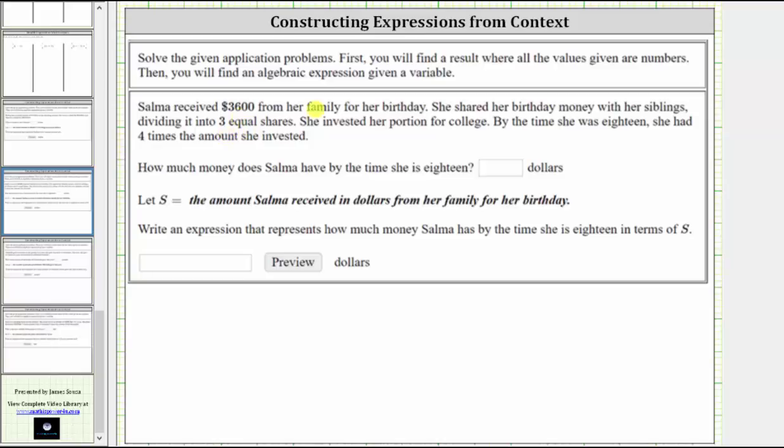Salma receives $3,600 from her family for her birthday. She shared her birthday money with her siblings, dividing it into three equal shares. She invested her portion for college. By the time she was 18, she had four times the amount she invested. How much money does Salma have by the time she is 18?